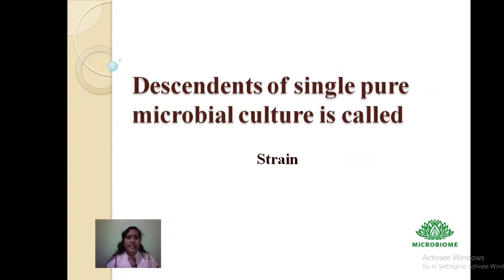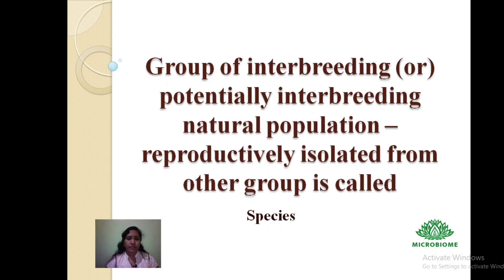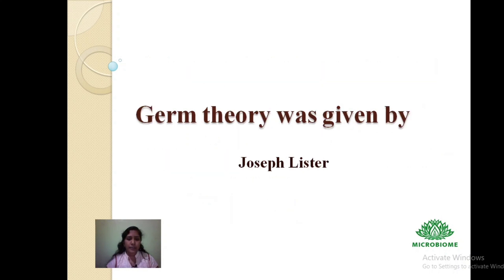Descendants of a single pure microbial culture are called a strain. A group of interbreeding or potentially interbreeding natural populations reproductively isolated from other such groups is called a species. The germ theory was given by Joseph Lister, who contributed the technique of pure culture of bacteria and discovered the system of antiseptic surgery.